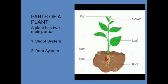Parts of a plant: A plant has two main parts. Joh plant hain, uske dho main parts hain. Korn korn se? First, shoot system. Second, root system.